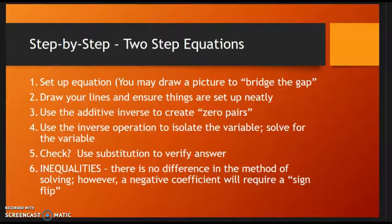Then you're going to make sure that you draw defining lines to see what's on one side of the equal sign as opposed to the other, and ensure things are set up neatly. You're going to use the additive inverse to create zero pairs as we did with our models — if you have a question about that, go to my modeling equations video for a refresher. You can then use the inverse operation to isolate your variable, and of course solve for that variable.